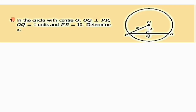Question one: in the circle with center O, OQ is perpendicular to PR, OQ equals 4 units, and PR equals 10. Determine x. Applying Theorem 1 — a line drawn from the center perpendicular to the chord bisects the chord — since PR is 10 units, PQ equals QR, meaning PQ equals 5 units and QR equals 5 units. The chord has been bisected.